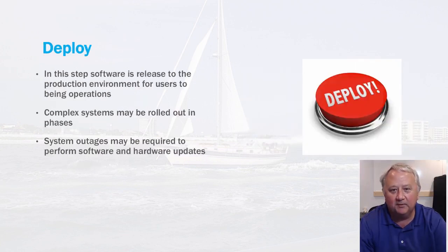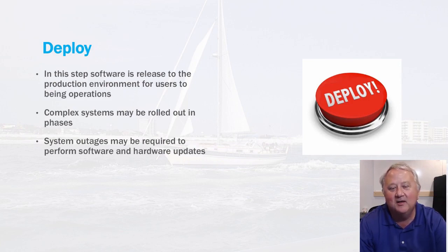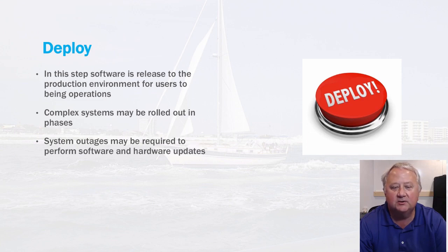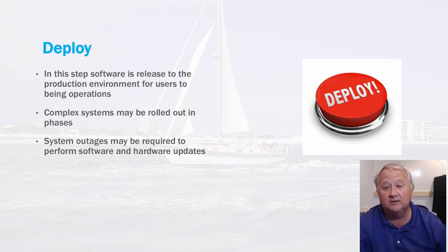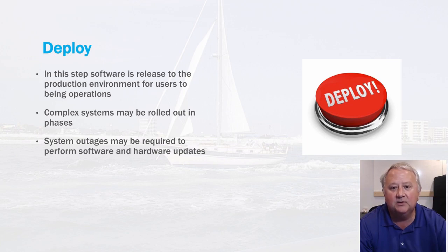The next step is the deployment phase — this is where we're actually going into production with our software. Development teams and operations teams will schedule some time when the system can be released. Many times this requires scheduling some kind of downtime or system outage to do upgrades. If this is a replacement of a system or a maintenance release, downtime will typically be scheduled during non-peak hours in the late evenings or perhaps over a weekend or a holiday.